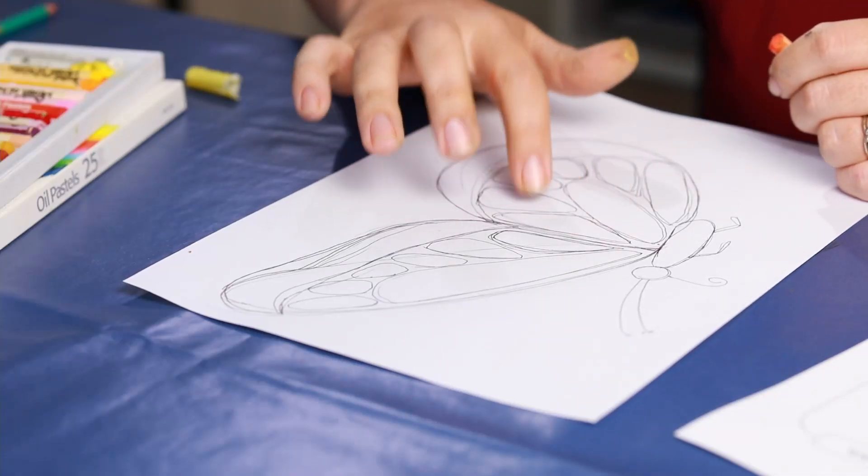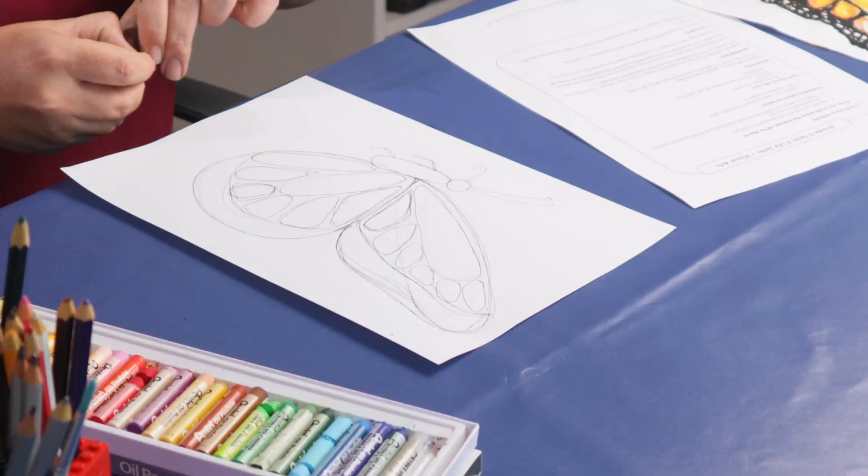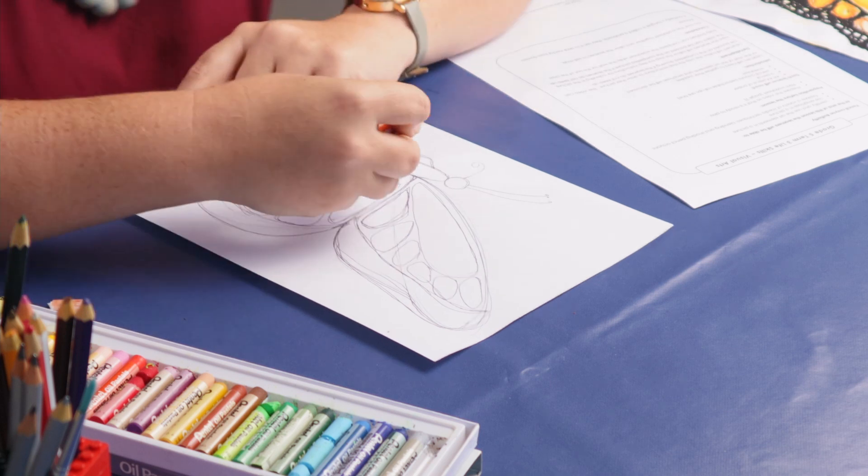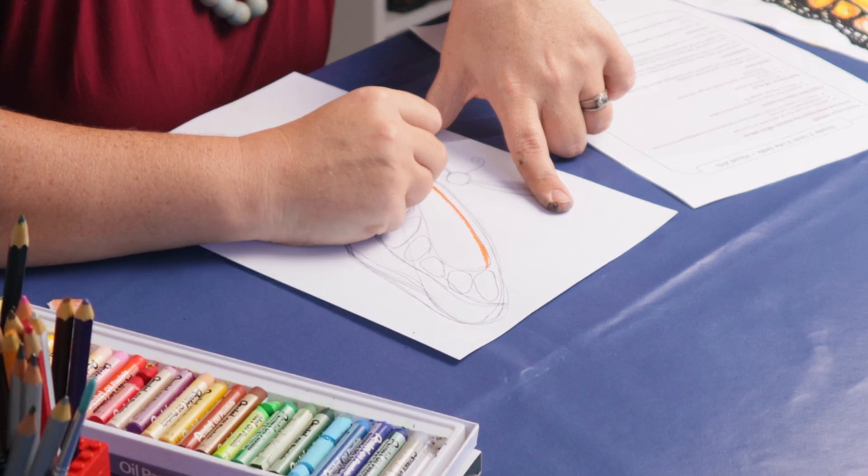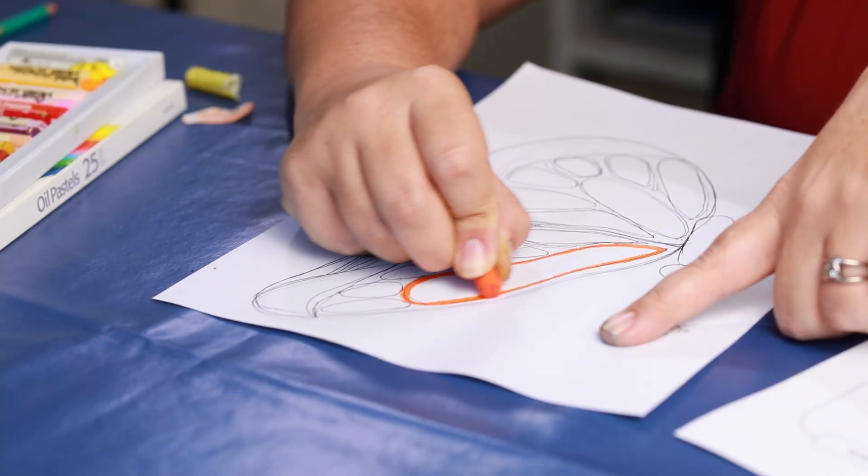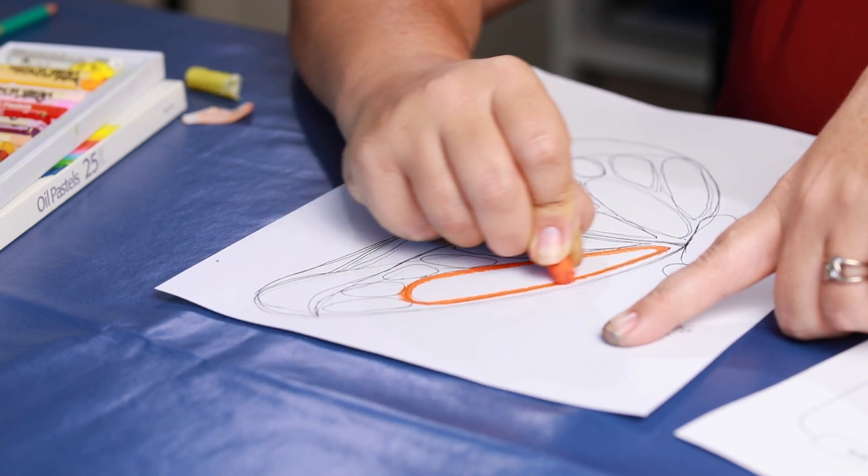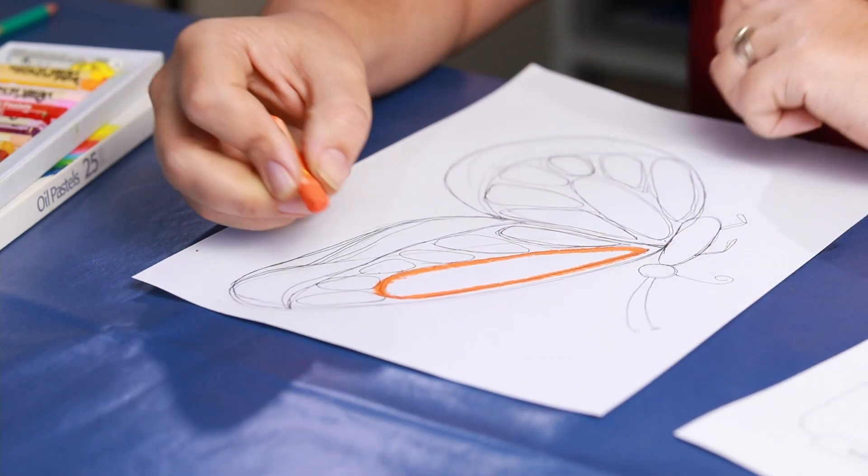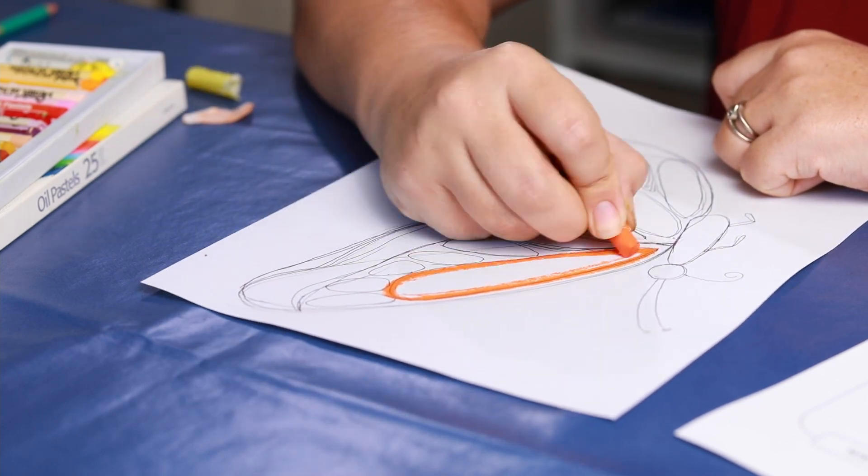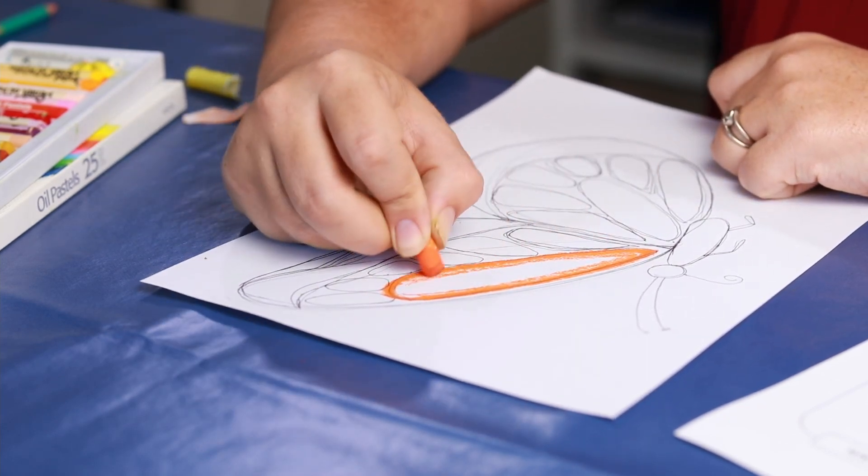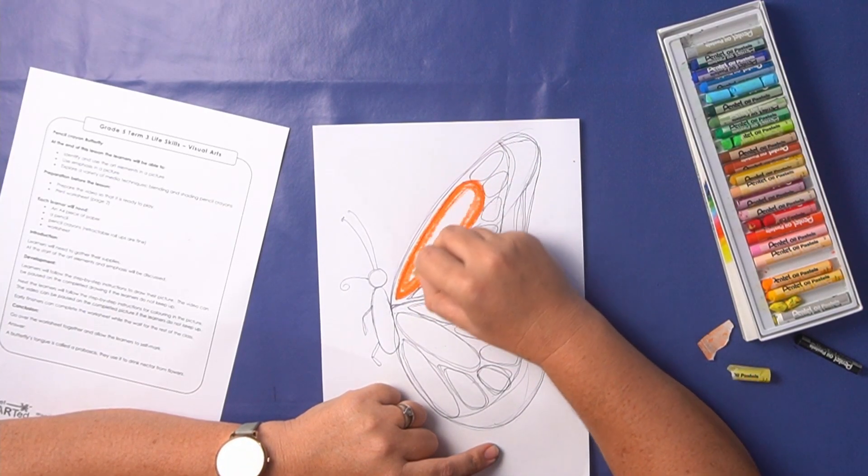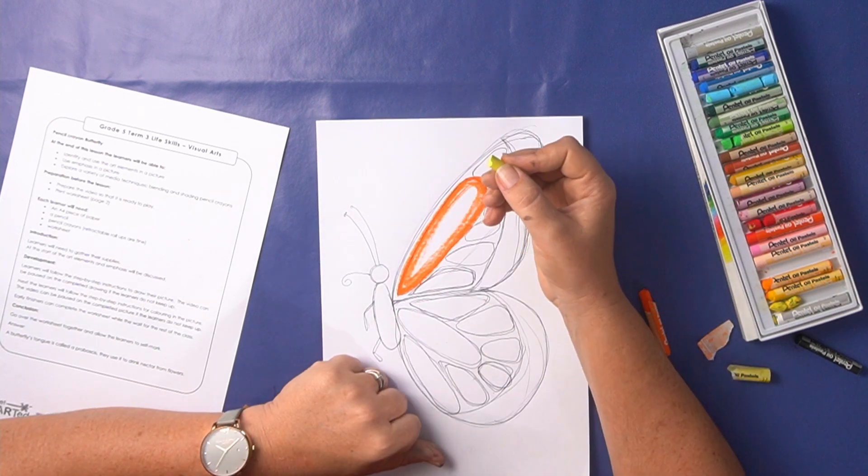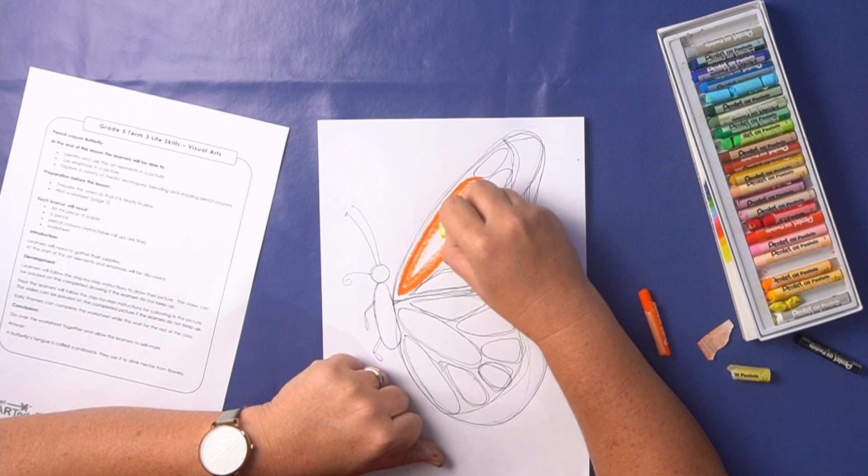We're going to color in each of these ovals that we drew on his wings. The ovals are all going to be colored in exactly the same way. It's a really simple technique for blending two colors together. So you outline it in the darker color. For our butterfly the darker color is going to be the orange. I'm pressing nice and hard and outlining it and then I'm going to do some lighter coloring on the inside of that line. So I'm not coloring in the whole oval, I'm just coloring in a section of it and then I'm going to take my yellow and color over this in little circles.